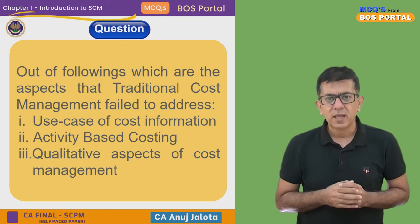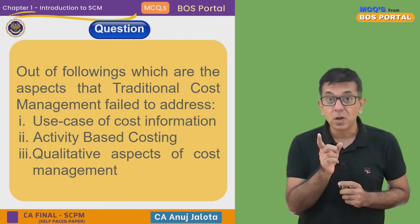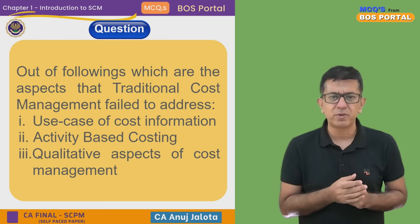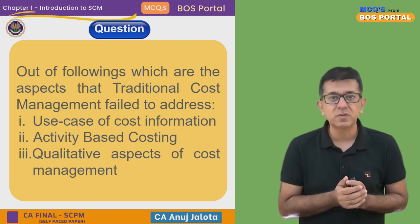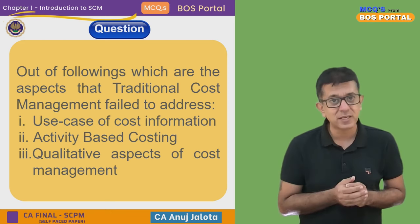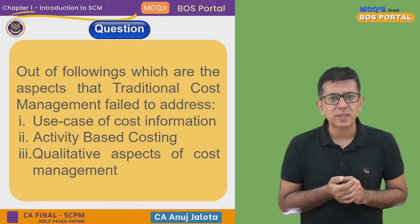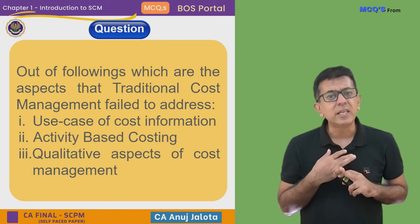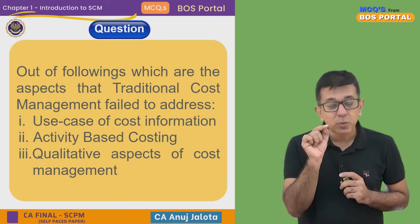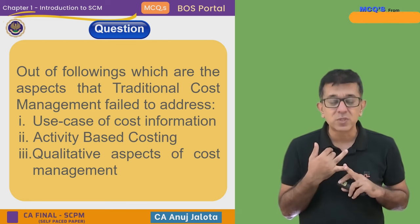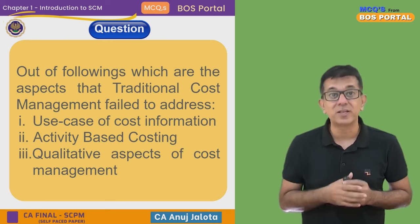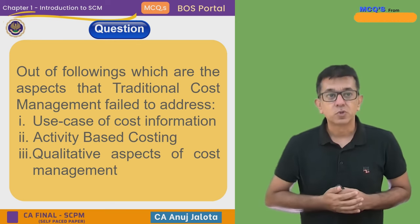Traditional cost management says: material cost should have been five but it was 5.5 — variance is adverse, very bad. But in today's world we have strategic cost management, modern cost management. It says you might have paid 50 paise more, but did you use better material? Did it lead to better user experience? Was the customer more satisfied? You incurred 0.5 rupees more but the customer was more satisfied, bought more units, sales increased, and profit increased. These are qualitative aspects that traditional cost management never considered.